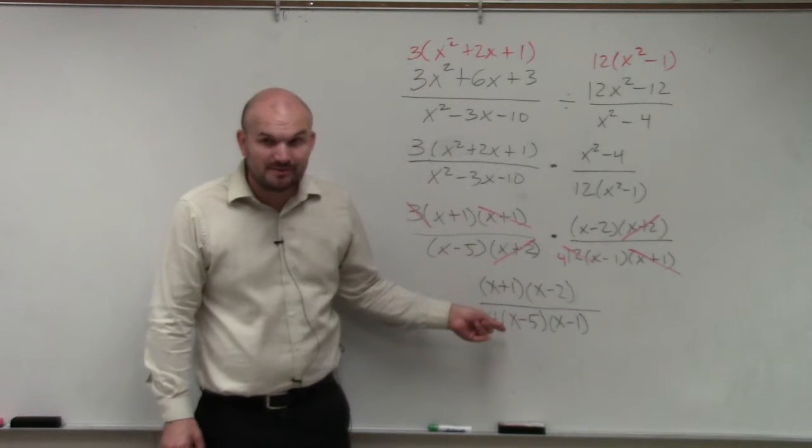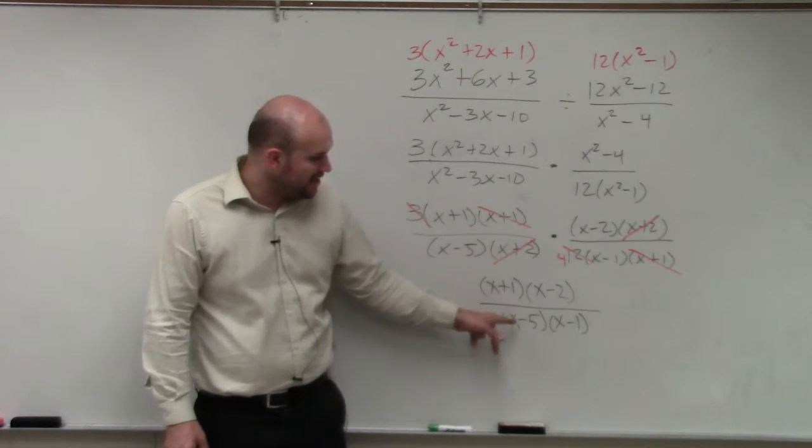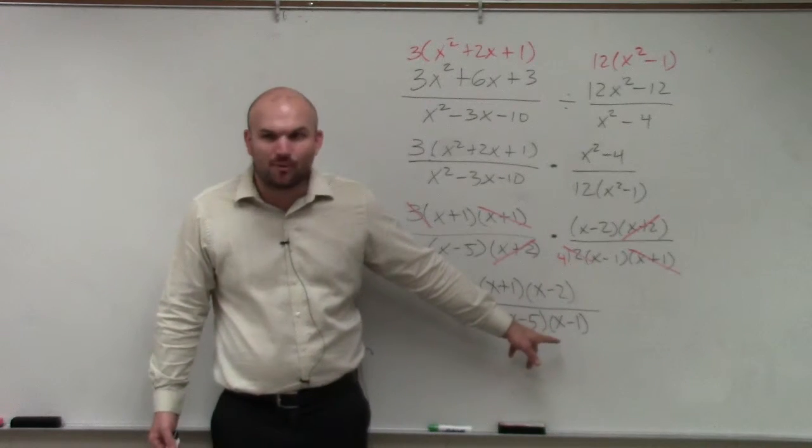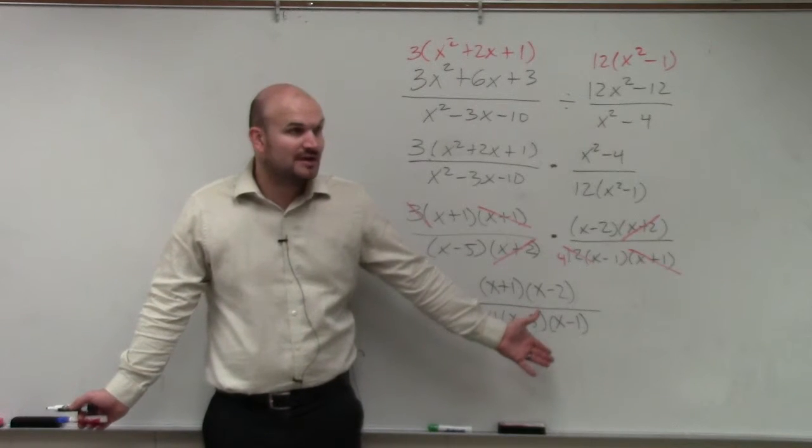But what's nice about this format anyways? We have already talked about this. It's really easy to determine the asymptotes, right, in this format? Because you already know, using zero product property, x cannot equal 5 and x cannot equal 1, right? So it's nice already having it factored out.